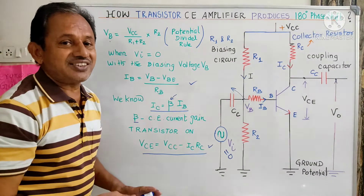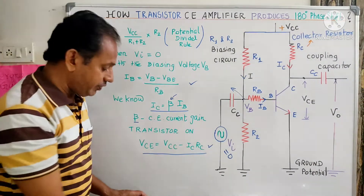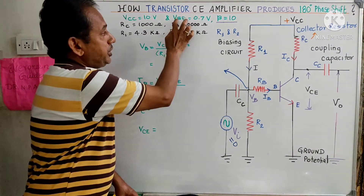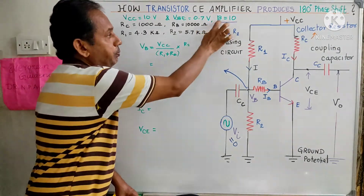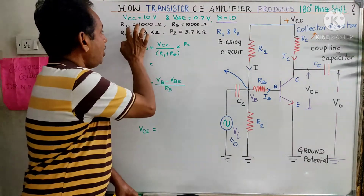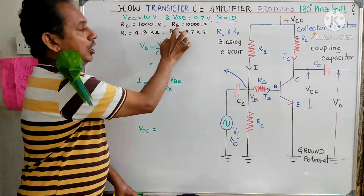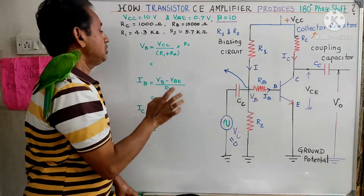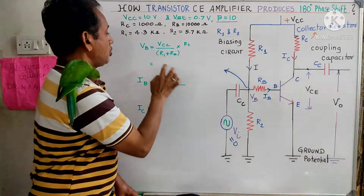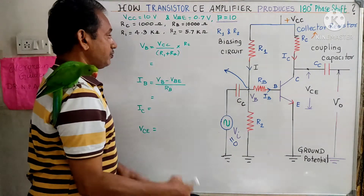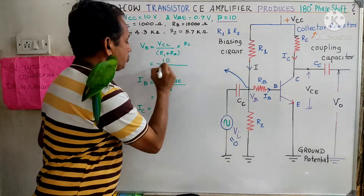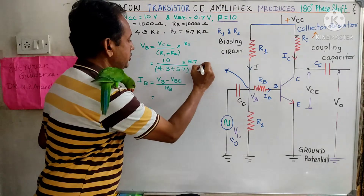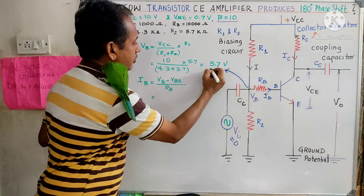We are going to analyze how the transistor works as an amplifier with a 180-degree phase shift, using a numerical example. Given: Vcc = 10V, Vbe = 0.7V (silicon transistor), beta = 10, Rc = 1000 ohms, Rb = 10,000 ohms, R1 = 4.3 kΩ, R2 = 5.7 kΩ. First, Vb = 10 × 5.7k / (4.3k + 5.7k) = 5.7 volts applied to the base.